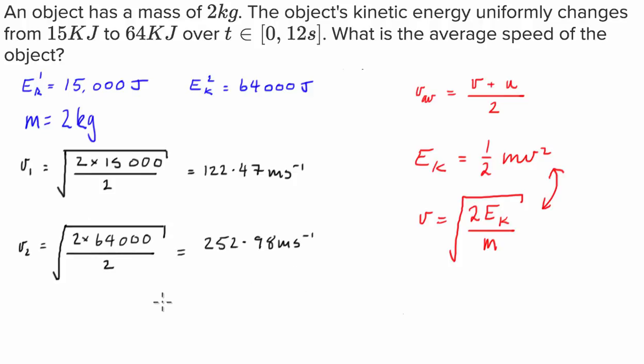Now, what I'm going to do is work out the average velocity. I'm going to just take the average of these two final and initial velocities. So the velocity average is equal to 122.47 and 252.98 divided by 2, which gives us an answer of 187.73 meters per second.